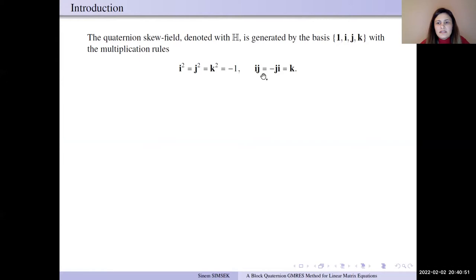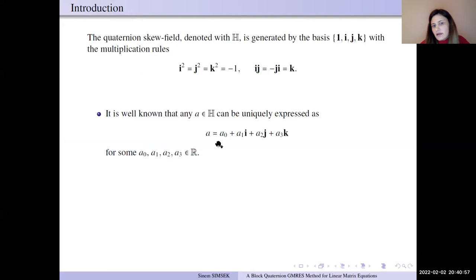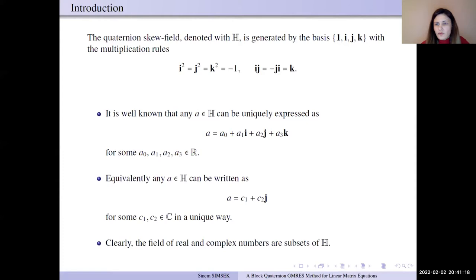A quaternion number can be uniquely expressed in this form, where a0, a1, a2, a3 are real numbers. Similarly, we can express a quaternion number as a complex number. So it is seen that the field of real and complex numbers are subsets of quaternions.